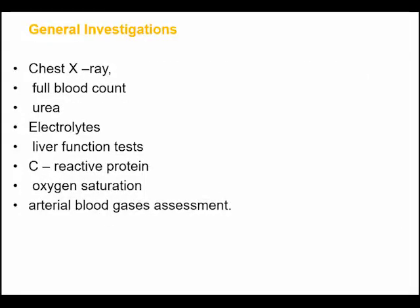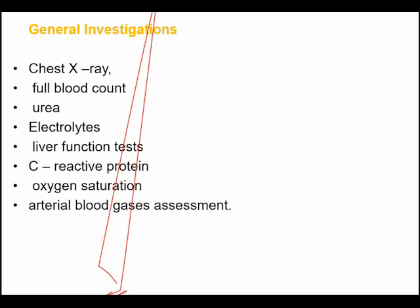General investigations include a chest X-ray — remember, we discussed consolidation in the lungs. A full blood count must be done, then electrolytes and liver function tests. C-reactive protein is commonly elevated in inflammatory disease; since pneumonia is inflammation of the lung parenchyma, we expect CRP to increase. Oxygen saturation should also be measured, as oxygen tends to be low in pneumonia.